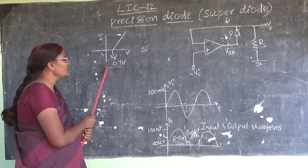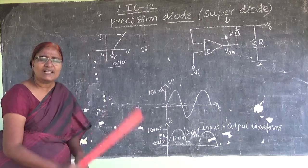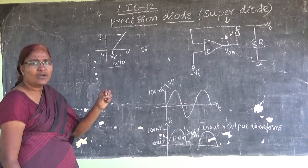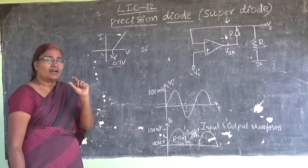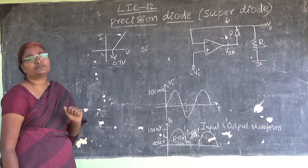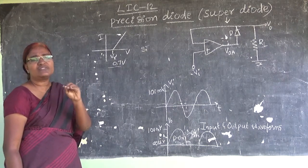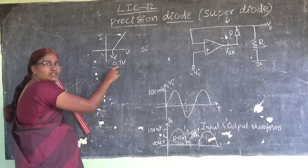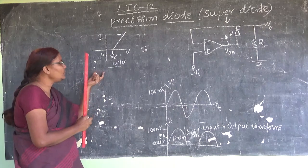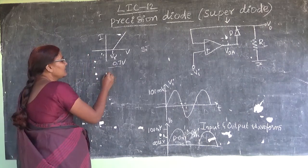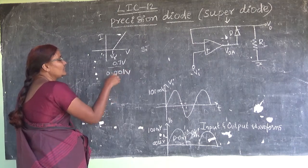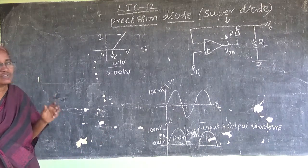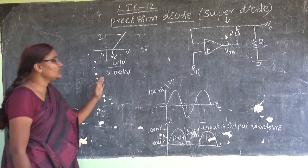In communication systems, my input signal will be in millivolts only. The modulating signal amplitude will be less than millivolts — around the millivolt vicinity. That means around 0.001 volt, which is very, very less than this cut-in voltage. So normal P-N junction diodes cannot be used to demodulate that.